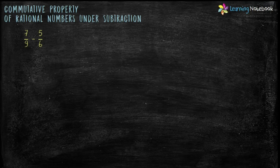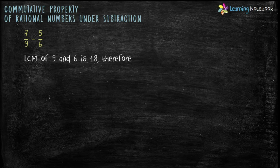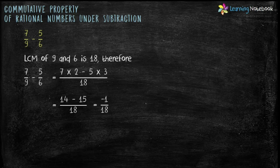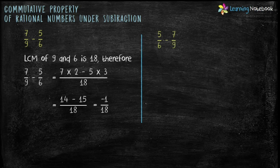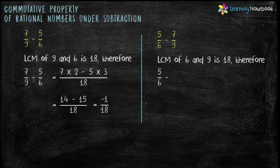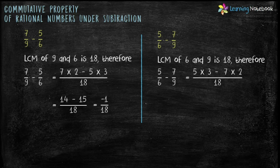Let's take an example. Subtract 5 by 6 from 7 by 9. LCM of 9 and 6 is 18. Therefore, we get 7 into 2 minus 5 into 3 by 18, which is equal to 14 minus 15 by 18. The answer comes out to be minus 1 by 18. Now, let's reverse the order and subtract 7 by 9 from 5 by 6. Again, LCM of 6 and 9 is 18. Therefore, we get 5 into 3 minus 7 into 2 by 18. Solving, we get 15 minus 14 by 18, which is equal to 1 by 18.